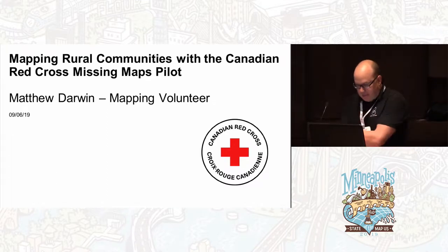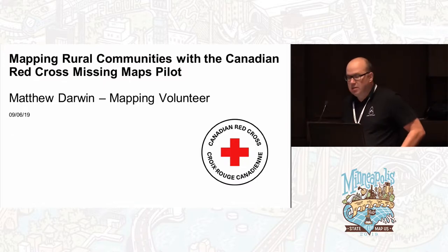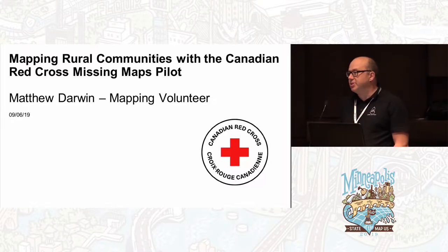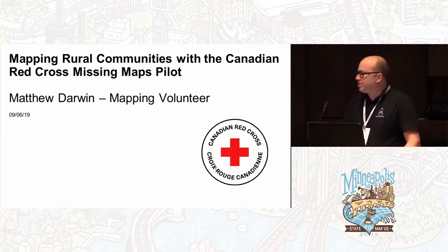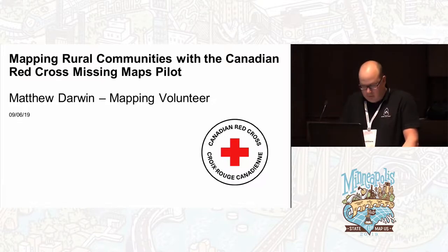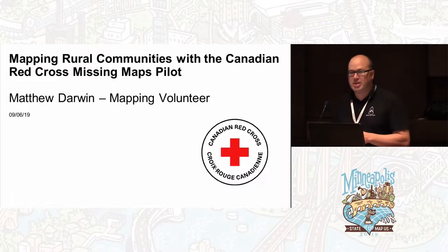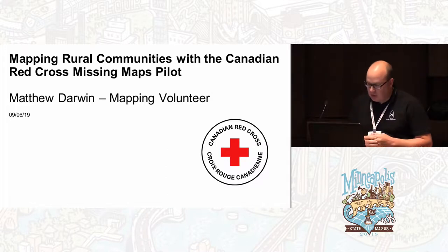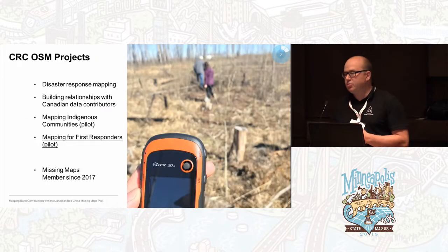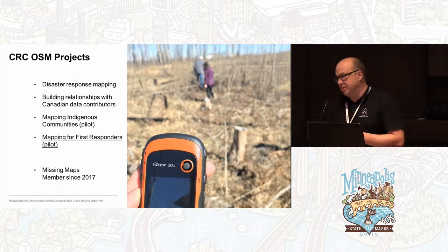The Canadian Red Cross is really interested in disasters — planning for and preventing disasters, disaster response, as well as disaster recovery. Some of the things you need for disaster planning are: where are the people, where is the key infrastructure in your community, and where are the hazards you need to watch out for? The Canadian Red Cross is really involved in rural communities, and that's where we're going to focus in this presentation.